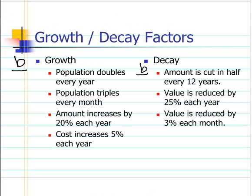When we create a model or an equation for an exponential decay or growth problem, one of the values we have to figure out is b — our growth or decay factor. We'll use some examples here.